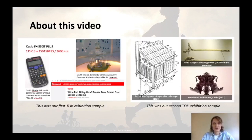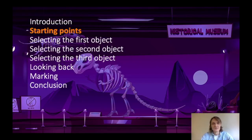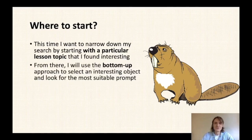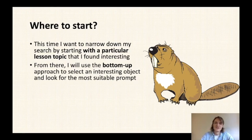An overview of the first two exhibitions is given here — if you haven't watched them, please do check them out. As a starting point, I want to narrow down my search by starting with a particular lesson topic I found interesting. From there, I will use the bottom-up approach to select an object first, without initially thinking about which IA prompt is most suitable.